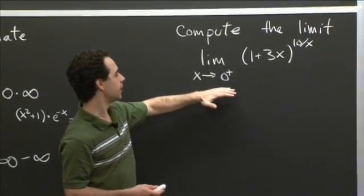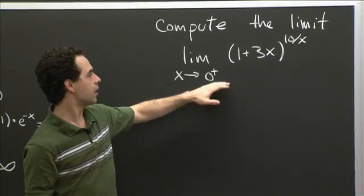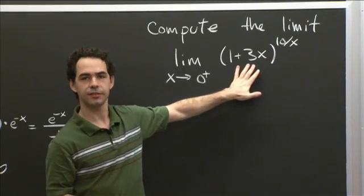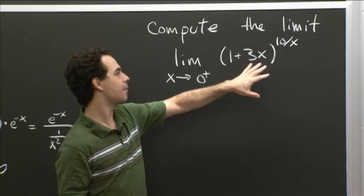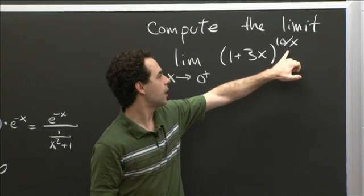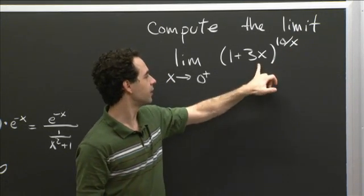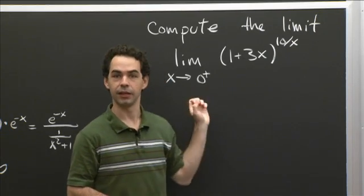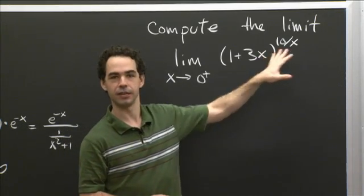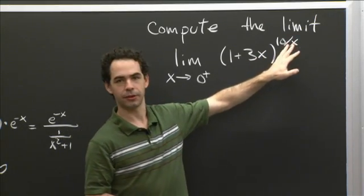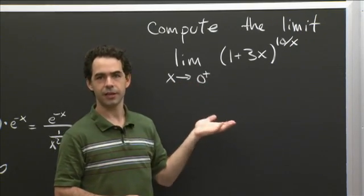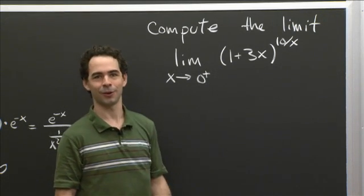Compute the limit as x goes to 0 from the right of (1 plus 3x) to the 10 divided by x. We see that as x is going to 0, this base is going to 1, which makes this whole expression want to be close to 1. Whereas this exponent is going to infinity, and since this is just a little bit bigger than 1, that makes the whole expression want to be big. So you have a tension here between the base going to 1 and the exponent going to infinity. Try to actually compute this limit — pause the video, take a couple of minutes to work on it, come back and we can work on it together.